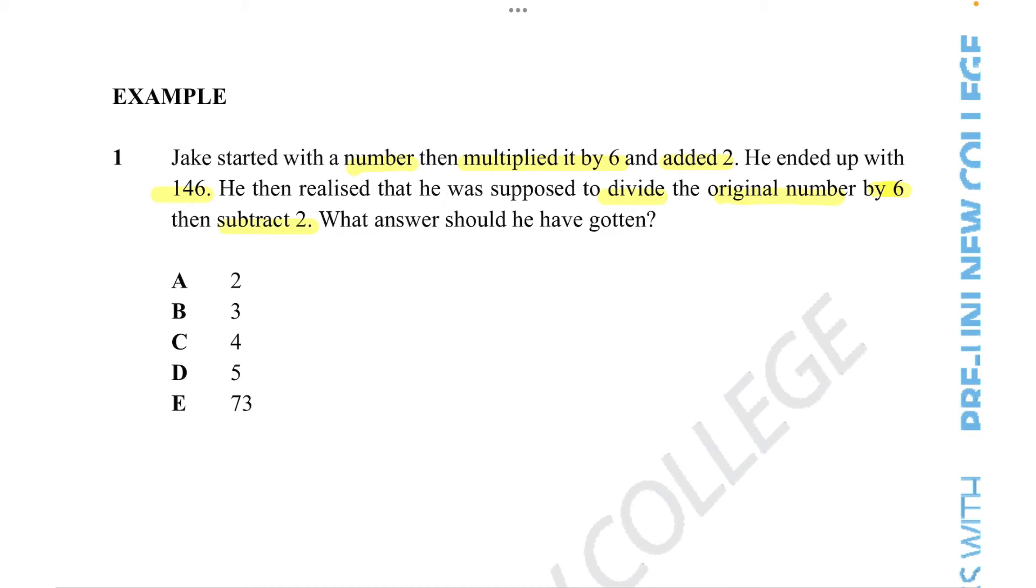What we need to do first in a word equation like this is that we need to make it an equation like we were doing before. Since this is an unknowns question, we need to figure out what the missing value is. In this case, there are two missing values: the original number and the number he should have gotten.